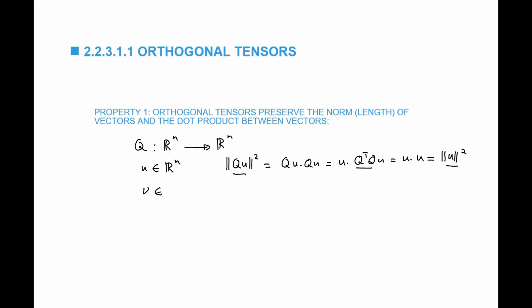Similarly, if I have v in R^n, the dot product Q u dot Q v after multiplying these vectors by an orthogonal matrix Q equals u dot Q transpose Q v. Since Q transpose Q equals I, this equals u dot v. So Q does not change the dot product between vectors.